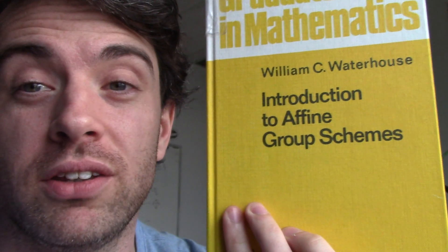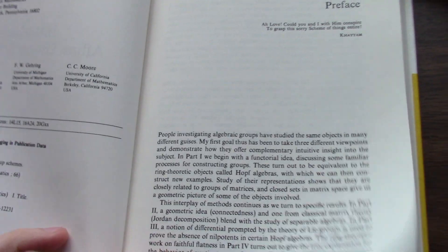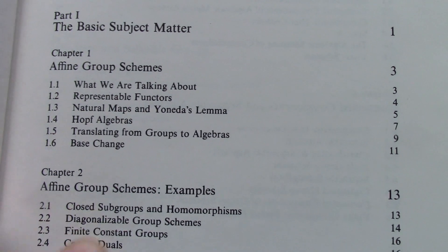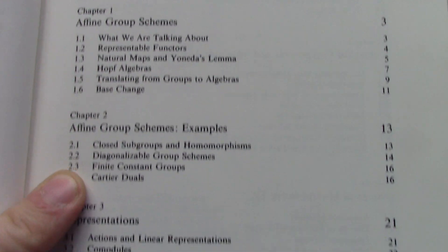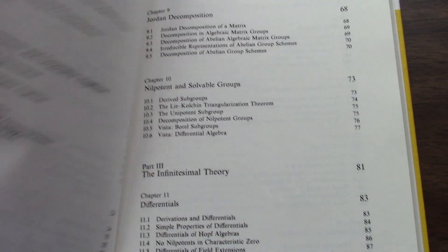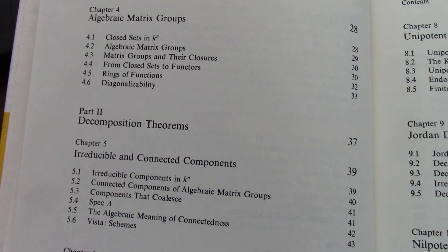Next one — I've looked at it a little bit: Introduction to Affine Group Schemes. Classic book. This is probably a book you should look at if you're doing representations of algebraic groups and related things. Basic stuff about affine group schemes — we're doing things in a functor of points kind of language for schemes, which is really important because when you're studying representation theory of matrix groups, you'll want to do some base change stuff.